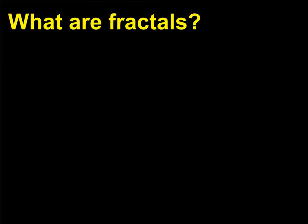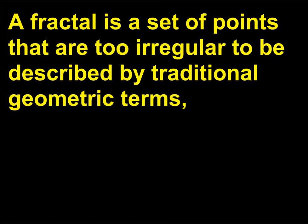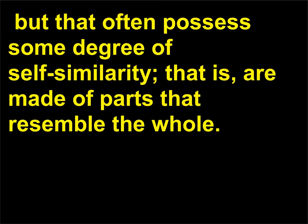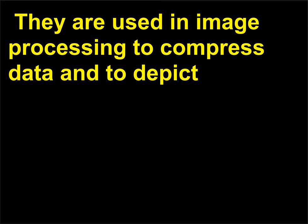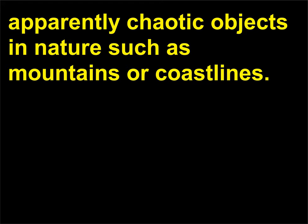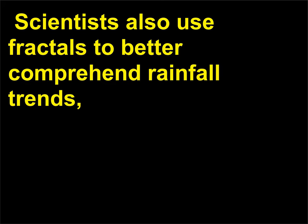What are fractals? A fractal is a set of points that are too irregular to be described by traditional geometric terms, but that often possess some degree of self-similarity — that is, are made of parts that resemble the whole. They are used in image processing to compress data and to depict apparently chaotic objects in nature such as mountains or coastlines. Scientists also use fractals to better comprehend rainfall trends.